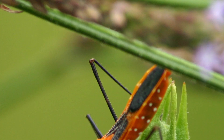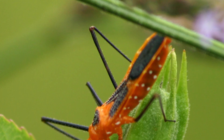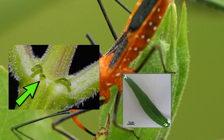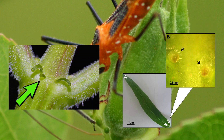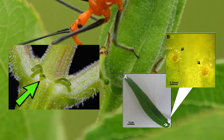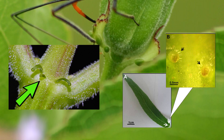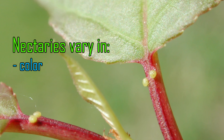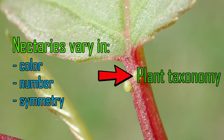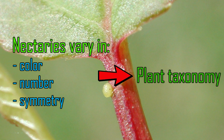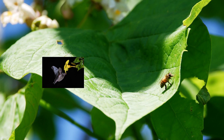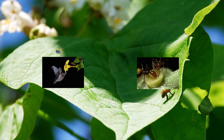Nectaries are glandular plant tissue that exudes nectar and can be either structural or non-structural, depending on the level of their differentiation from surrounding tissue and continuity of secretion. They may vary in color, number and symmetry, which means they can be used in plant taxonomy. Based on their location on a plant, nectaries can be floral or extra-floral.